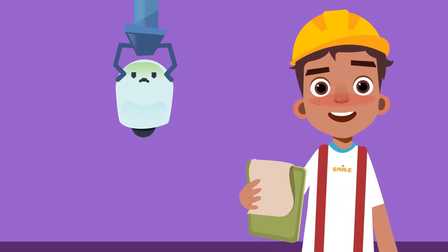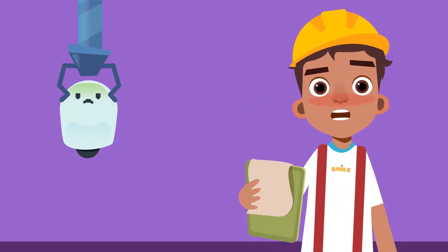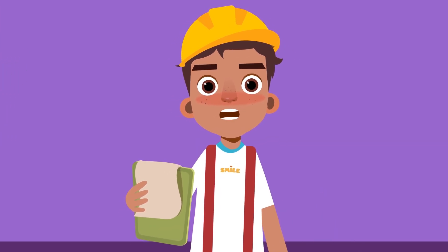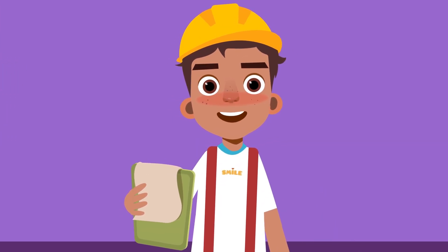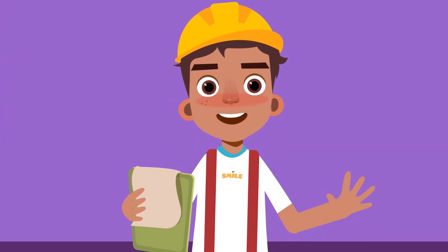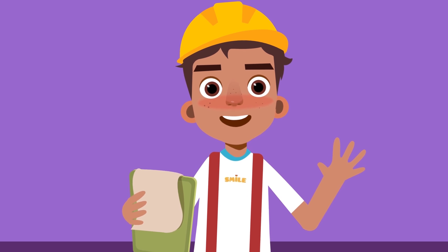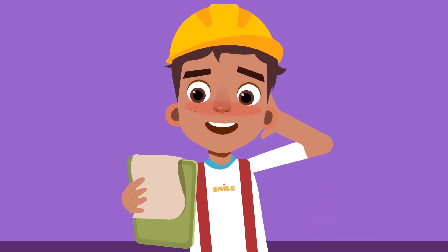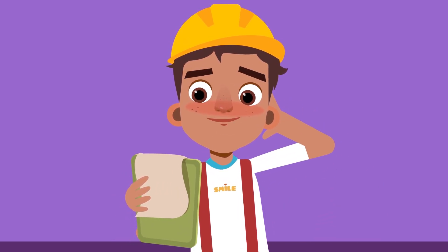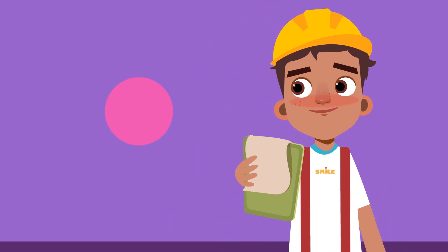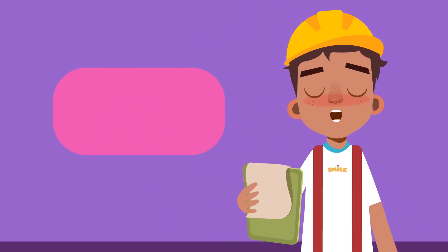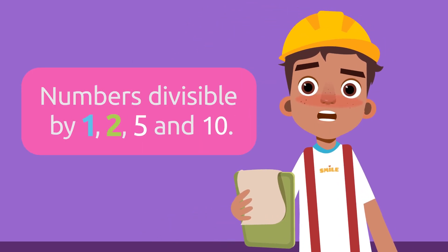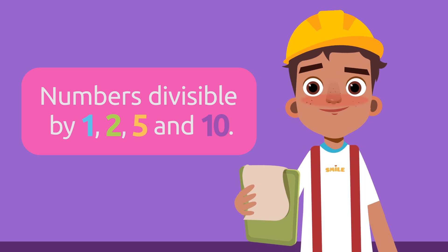Each number has its own divisibility rule. Some are based on adding all the digits. For others, you have to look at the last digits, and some can be done by doing several simple operations. Today, we'll talk about the numbers divisible by one, two, five, and ten.